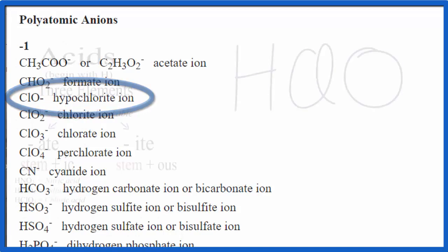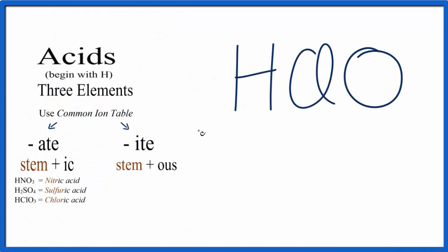Back to our flowchart, we'll write hypochlorite. When we look at the flowchart, we can see if it ends in I-T-E, we're going to use the stem, the hypochlor, and add O-U-S. So we're going to get rid of the I-T-E here, and we'll replace that with O-U-S.